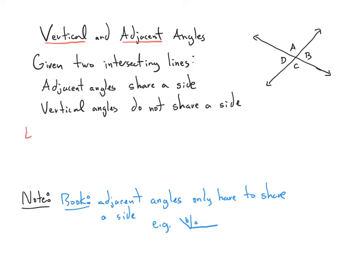Let's write down a couple of examples. A and D are adjacent, since they share that common side. And B and D are vertical, since they're across the X from each other.